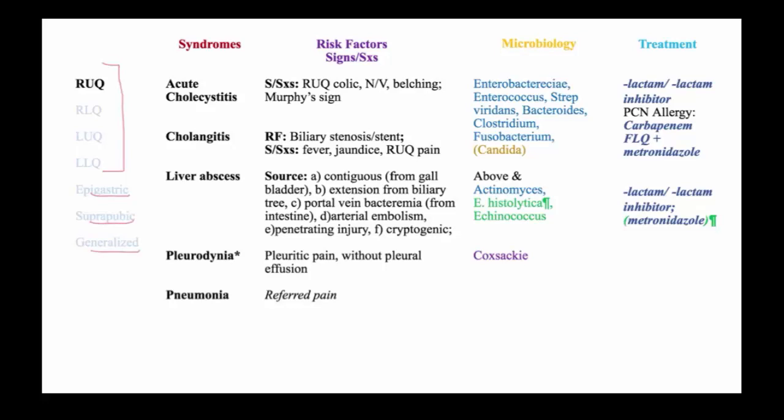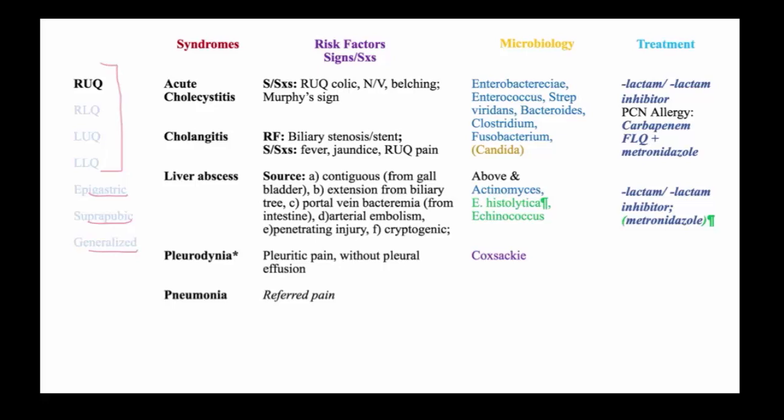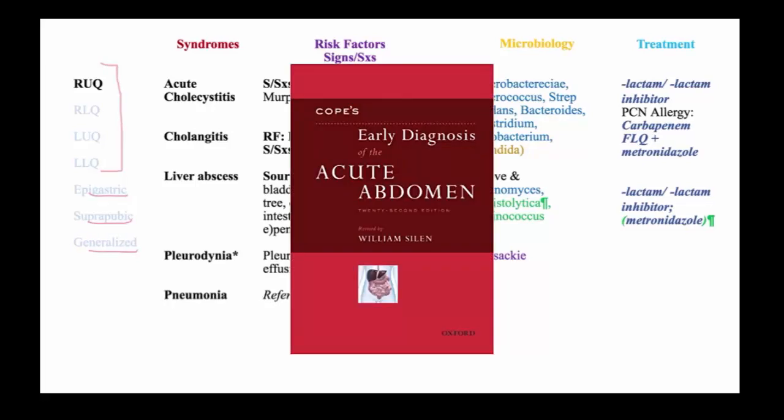We will highlight those which are caused by infectious etiologies, but also recognize those that are non-infectious in etiology. I refer you to the book entitled Cope's Early Diagnosis of the Acute Abdomen, revised by William Silen. Anyone going into surgery, this is mandatory reading.